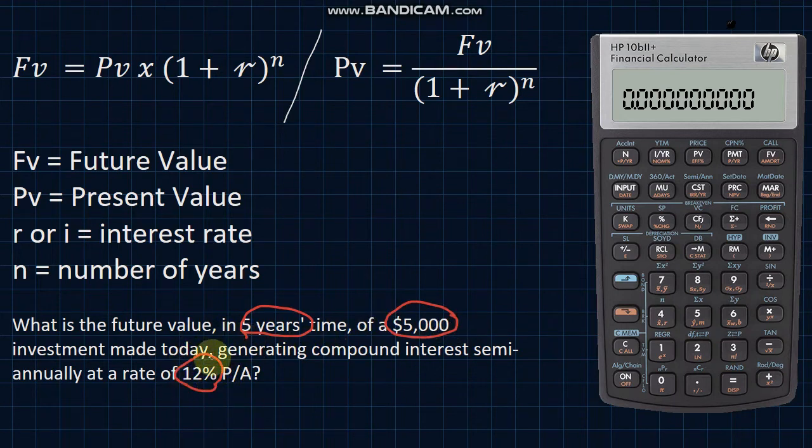The interest rate is 12%. We're looking for the future value. And also take note that this is mentioning the semi-annual compounding interest. So we're going to need to modify this 5 years to make up for semi-annual compounding. So let's plug these in here. Our present value is $5,000. However, keep in mind that because this is an investment being made today, that is going to be input to the calculator as a negative number.